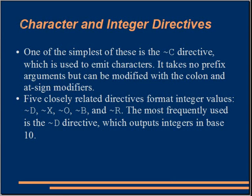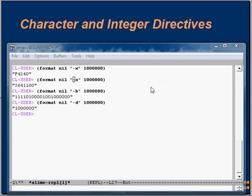Let us see the character and integer directives. One of the simplest is the tilde C directive, which is used to emit characters. It takes no prefix arguments but can be modified with the colon and at-sign modifiers. Five closely related directives format integer values. The most frequently used is the tilde D directive, which outputs an integer in base ten.